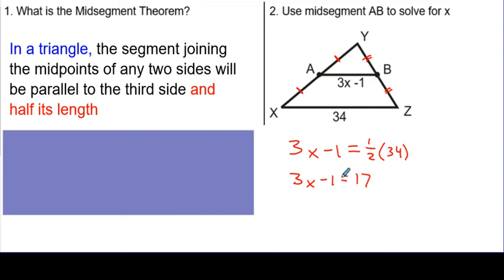So I'm going to add one to both sides. Let's get rid of that minus 1. So I get 3X equals 18. And my last step here, I'm just dividing both sides by 3. So I get X equals 6. And that is my final answer.